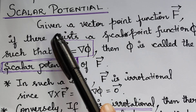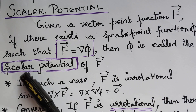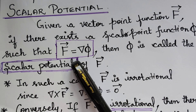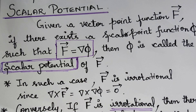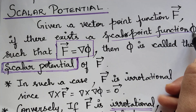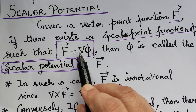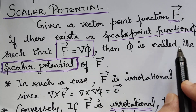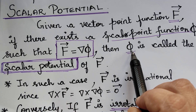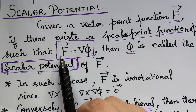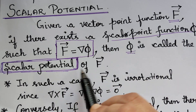Given a vector point function f vector, if there exists a scalar point function phi such that f vector is equal to nabla phi, then phi is called the scalar potential of f vector. In order to find phi, we have to equate f vector and the gradient of phi, equate the components, and find the scalar potential phi.